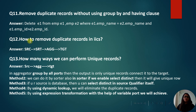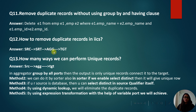How do you remove duplicate records in IICS? The mapping flow is: Source → Sorter → Aggregator → Target. In the Sorter transformation, sort the key column — for example, employee_id — in ascending order. In the Aggregator transformation, perform a group-by on the employee_id column.